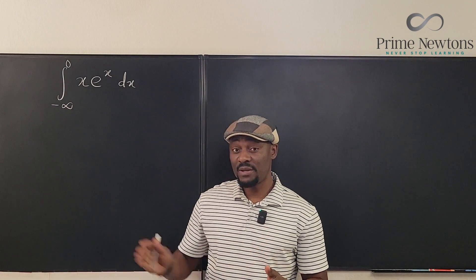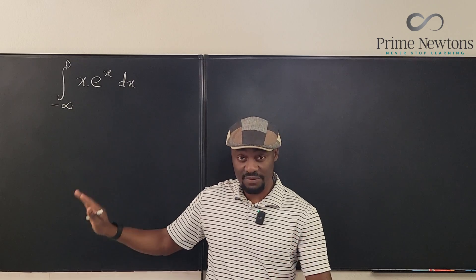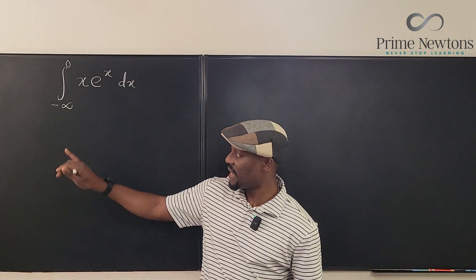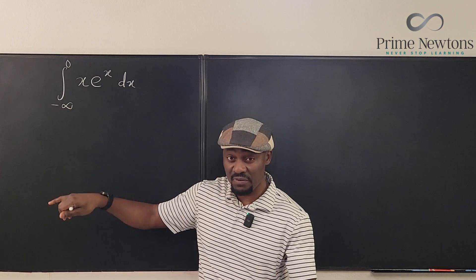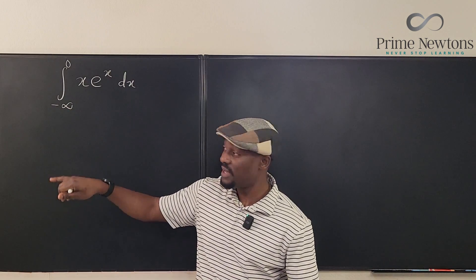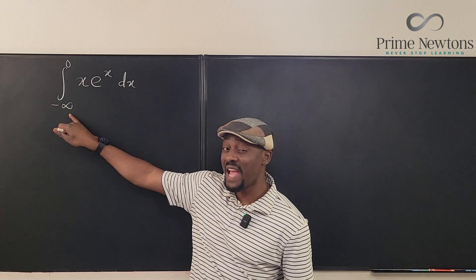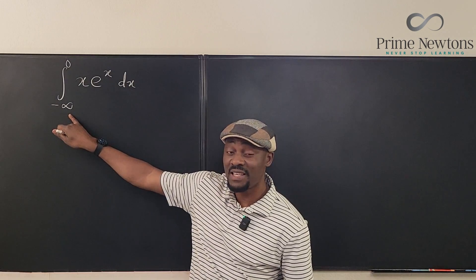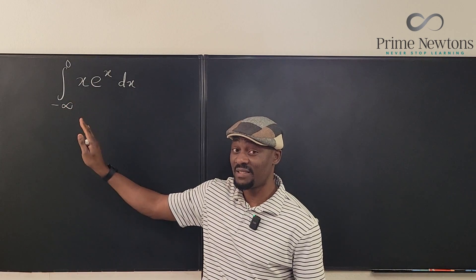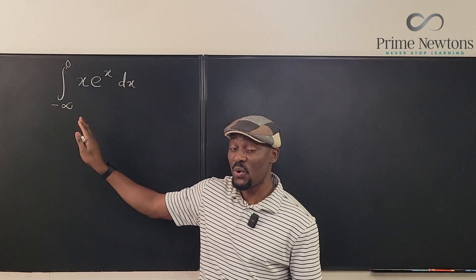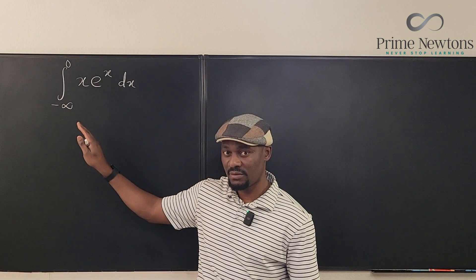Any integral written this way — any definite integral that has one or both of its boundaries at infinity or negative infinity — cannot be computed just the way it is. This is called an improper integral.